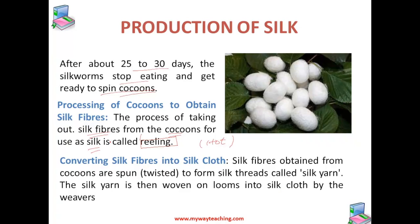The silk fiber obtained from the cocoons is spun and twisted to form silk threads called silk yarn. This silk yarn is then woven on looms by weavers to make silk cloth.